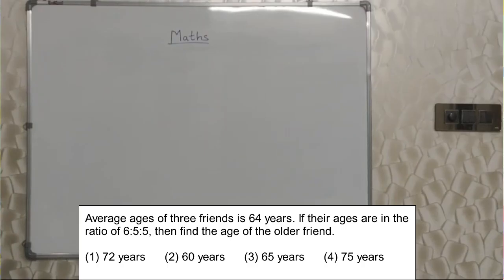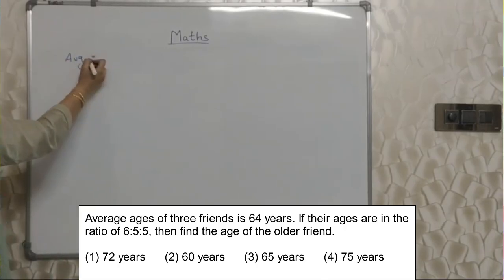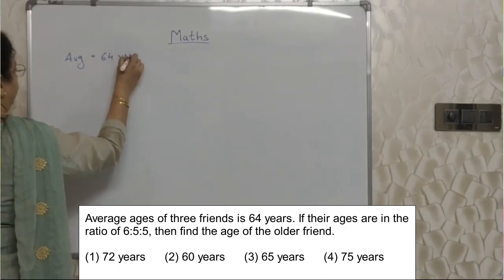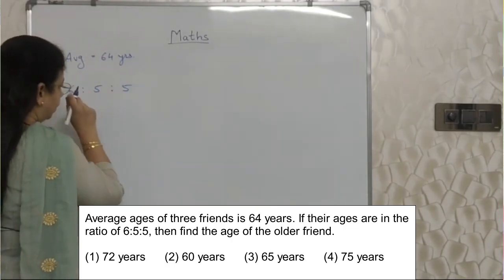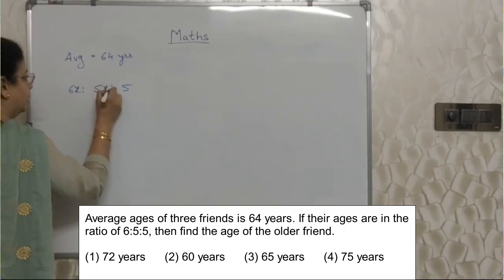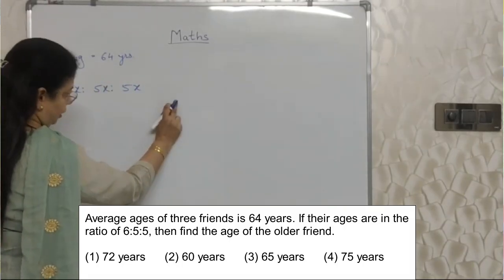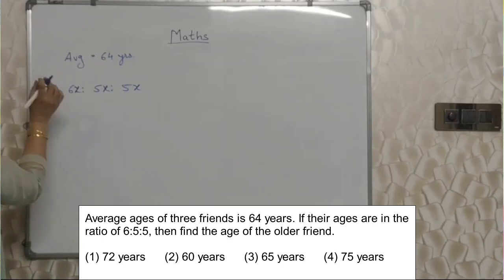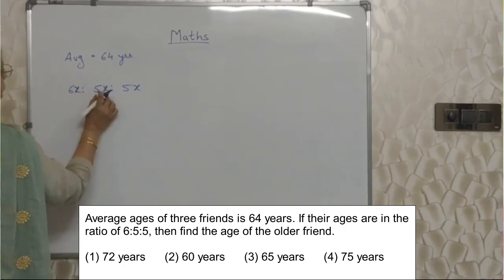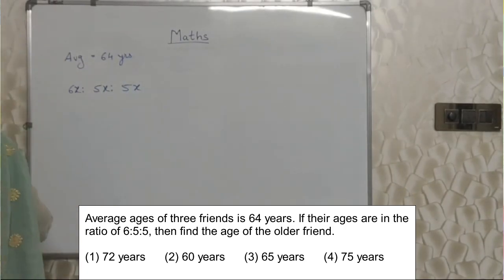Average ages of 3 friends is 64 years. Their ages are in the ratio of 6 is to 5 is to 5. Find the age of the oldest friend. They have given the average as 64 years and the ratio is 6:5:5. To this ratio if we attach x, it becomes their actual ages. So the eldest one is 6x years old and the other two are 5x years old.